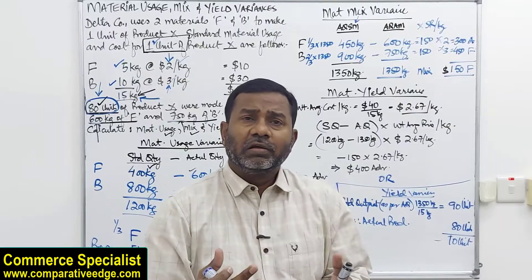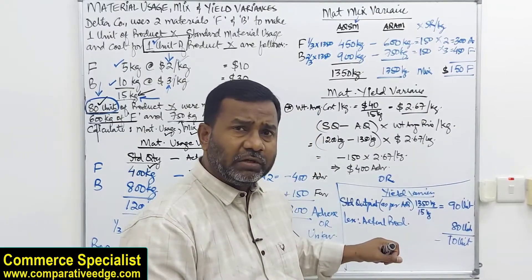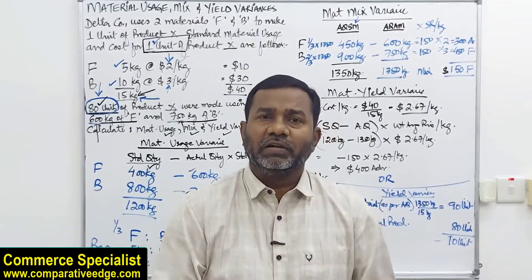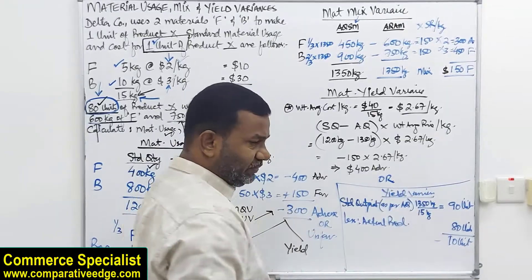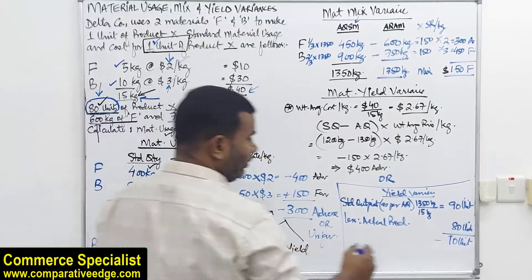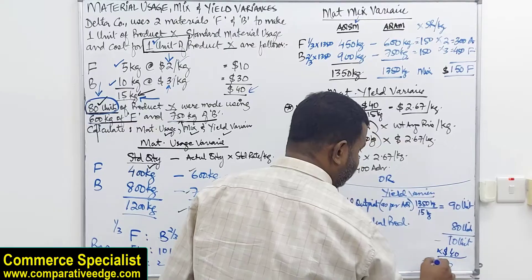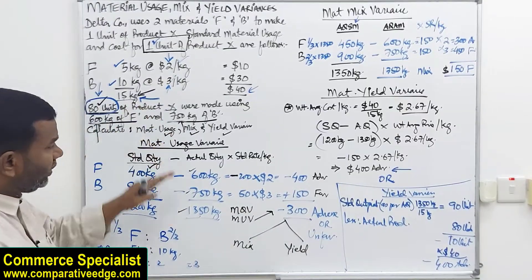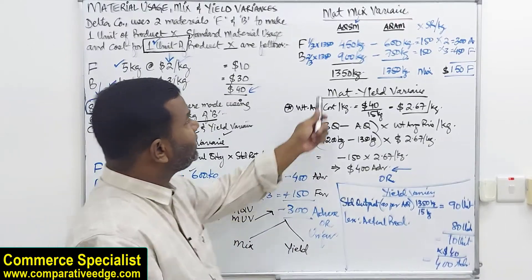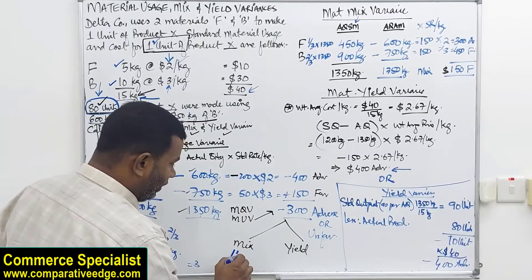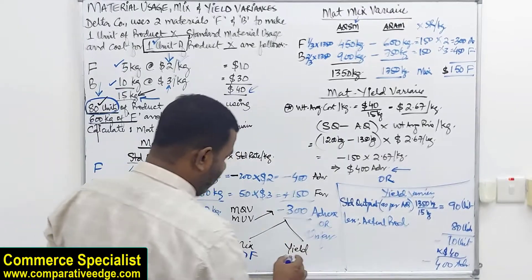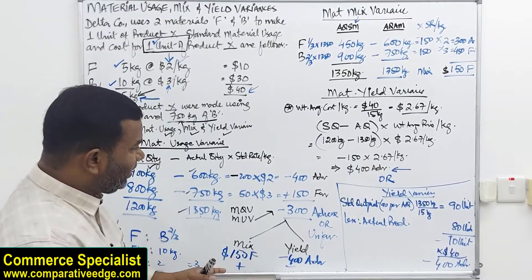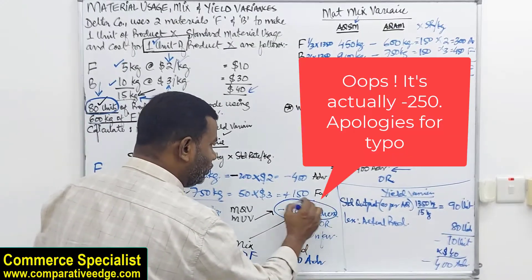By using 1,350 kg you should have made 90 units but ended up making only 80 — your input is more but output is less. Those 10 fewer units at a standard cost of $40 each = 10 × $40 = $400 adverse yield variance, matching method 1. Now to reconcile: material usage variance = mix variance + yield variance, which is −$400 adverse + $150 favorable = −$300 adverse — exactly matching the usage variance calculated earlier.